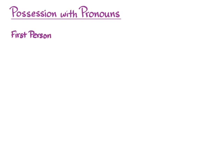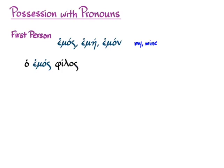Let's go through this by person, starting with first person. We have the first person possessive adjective emos, eme, emon, which means 'my' or 'mine.' You would put that possessive adjective in attributive position — for instance, emos philos — and that means 'my friend.' But you can also use your personal pronoun in predicate position: ho philos mou, literally 'the friend of me,' which amounts to 'my friend.' Notice that I'm using the enclitic version of the first person pronoun to indicate this kind of possession.